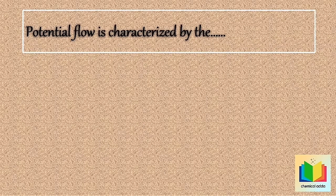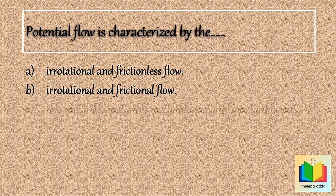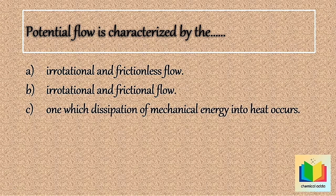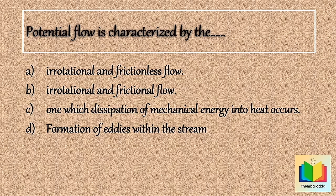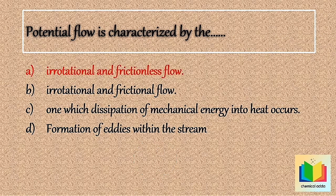Next question: Potential flow is characterized by — Option A: irrotational and frictionless flow. Option B: irrotational and frictional flow. Option C: flow in which dissipation of mechanical energy into heat occurs. Option D: formation of eddies within the stream. Your time starts now... Stop. The answer is Option A: irrotational and frictionless flow.